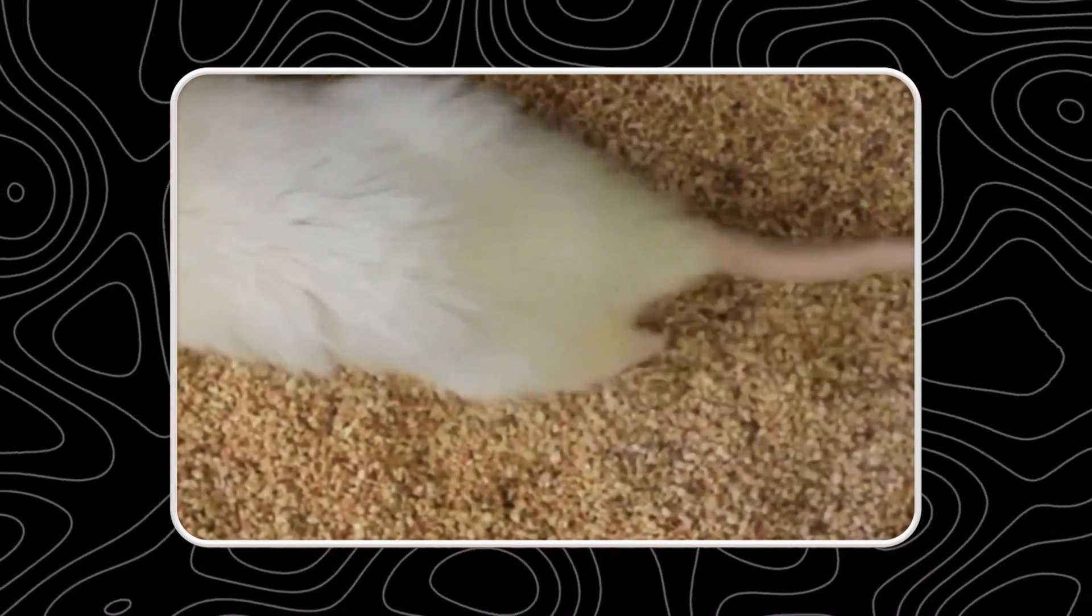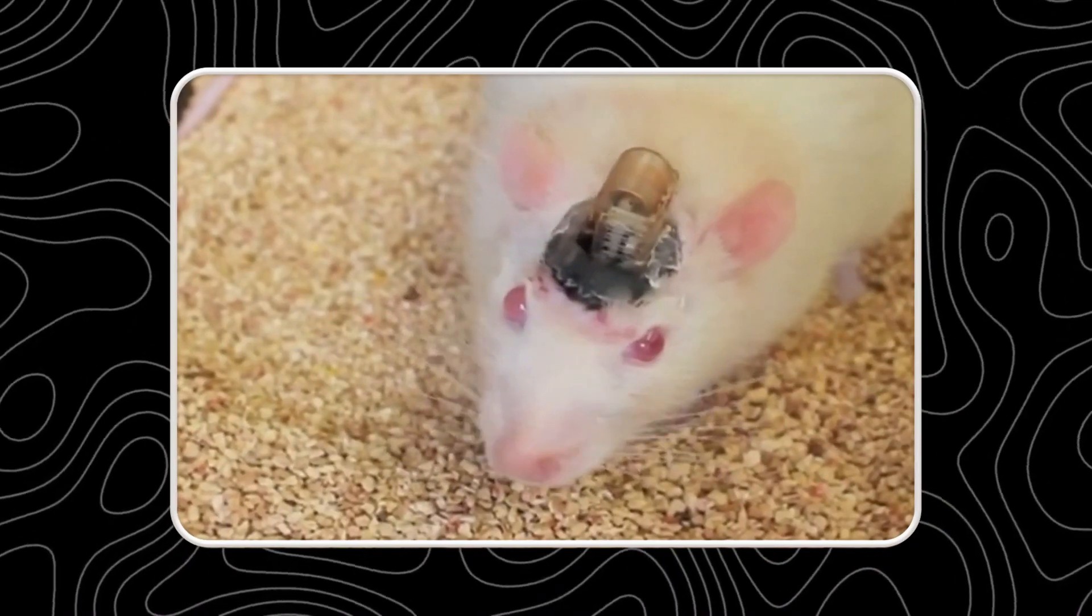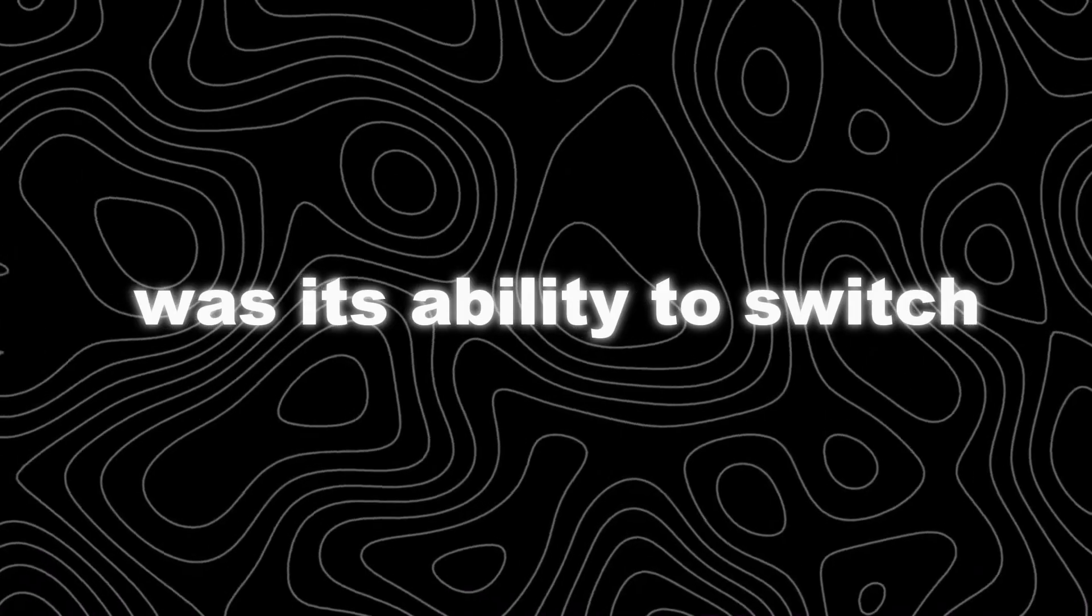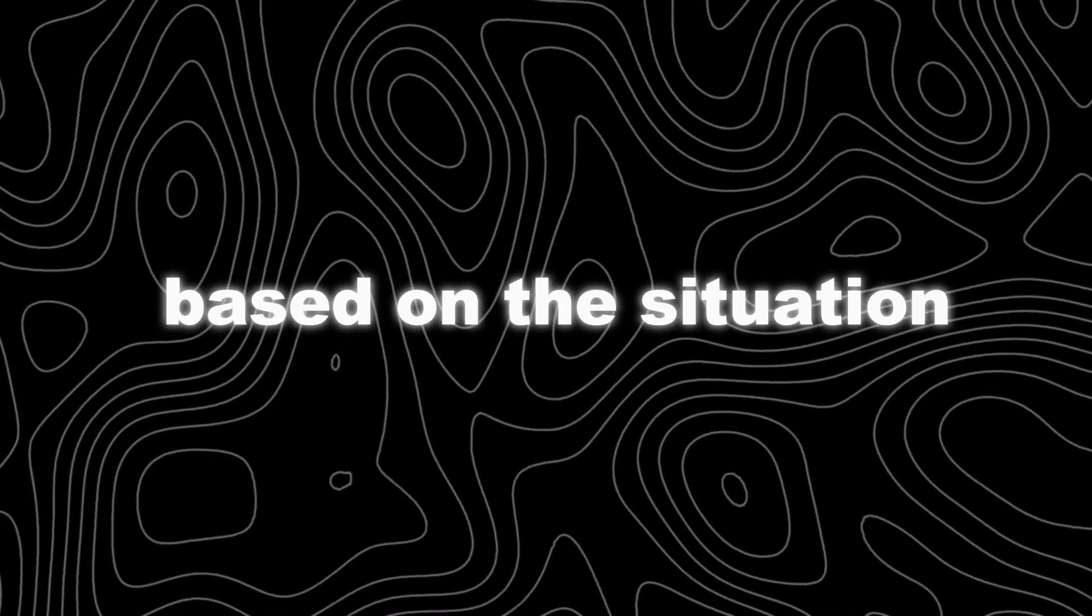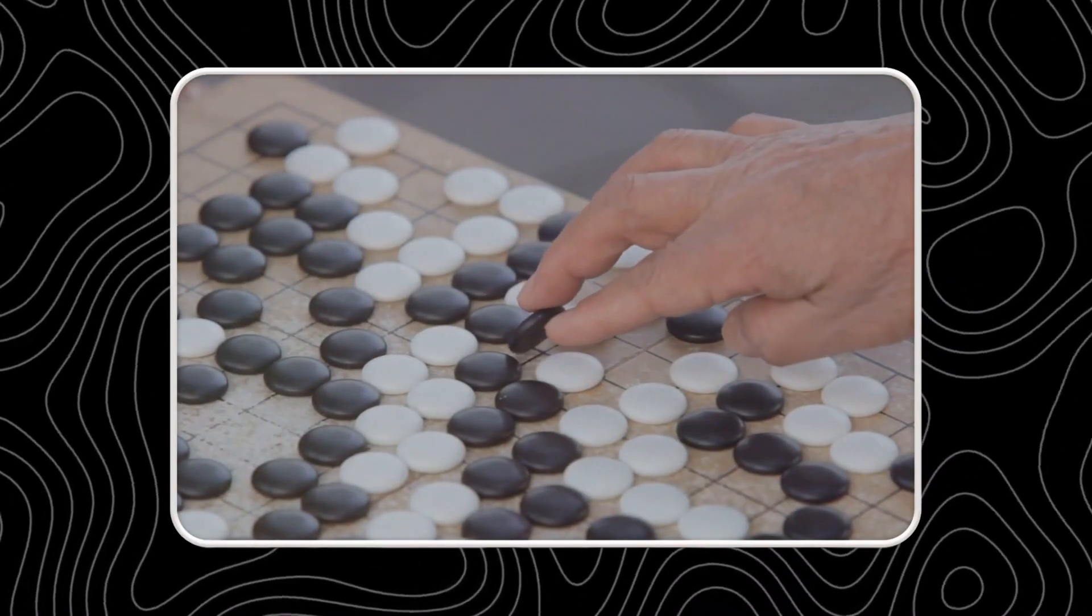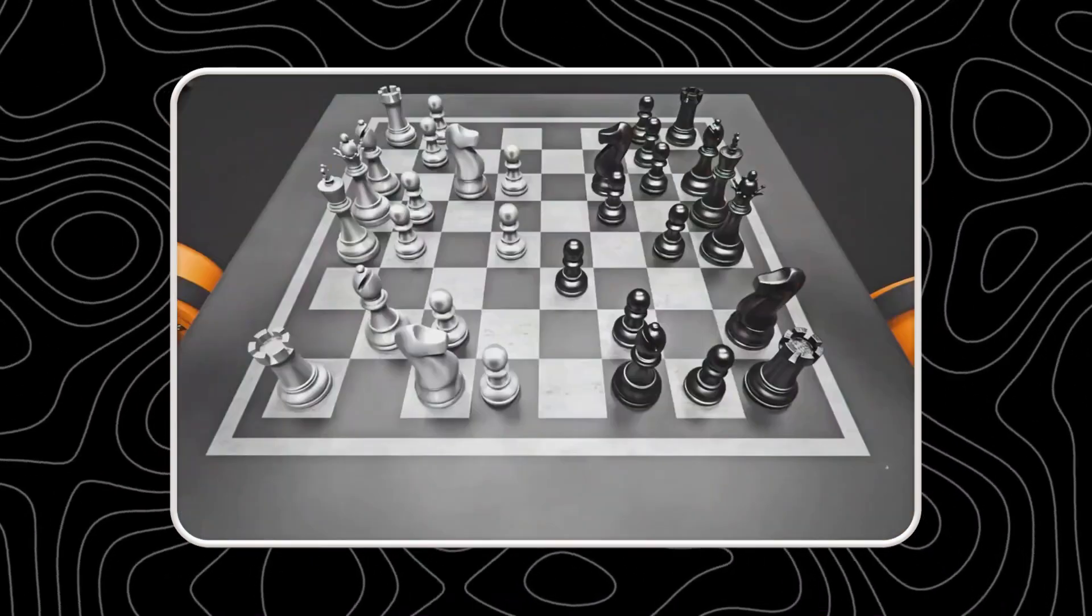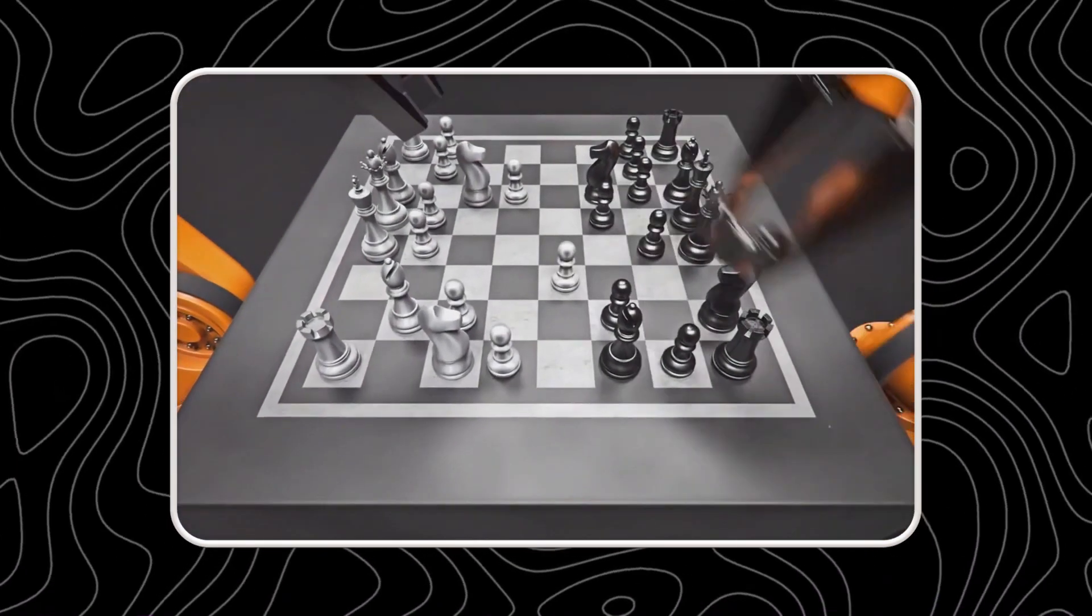The AI not only learned to move the virtual rat, but also developed brain activity patterns similar to those of actual rats. A key feature of the virtual brain was its ability to switch between different modes based on the situation. This behavior is very similar to how a real rat's brain changes its activity patterns for different actions.